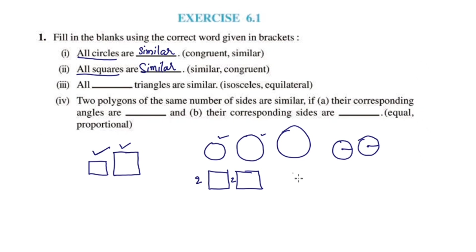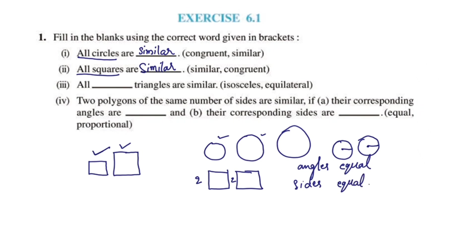Now we are learning the conditions for two triangles to be similar. There are corresponding angles — triangles with equal angles, and corresponding sides in equal ratio, which means proportional. These two conditions indicate similarity.